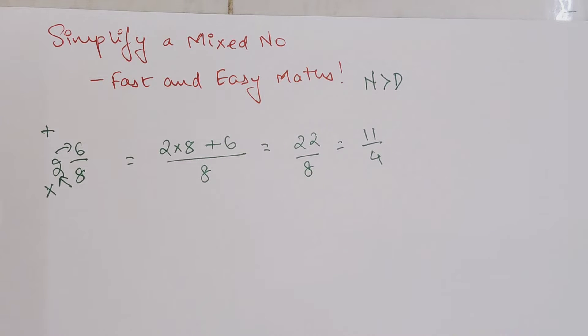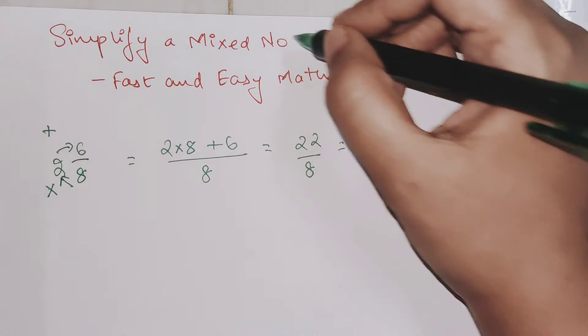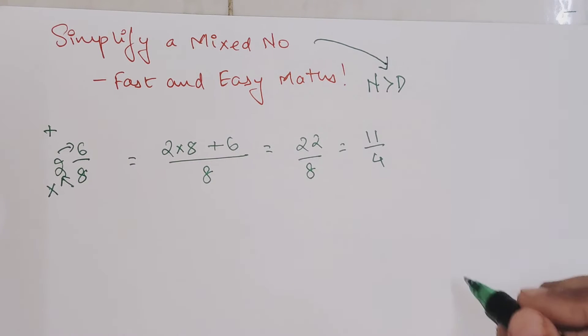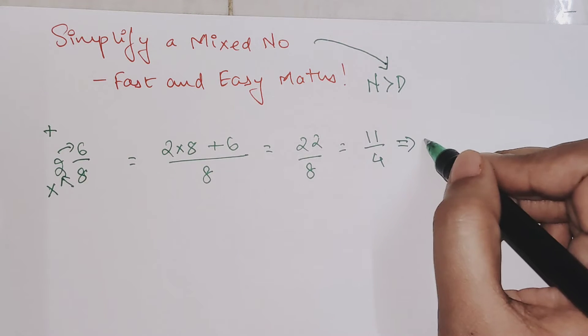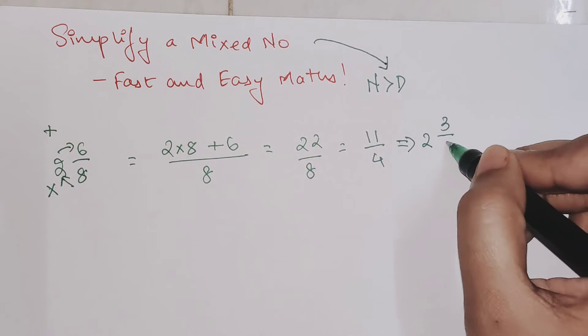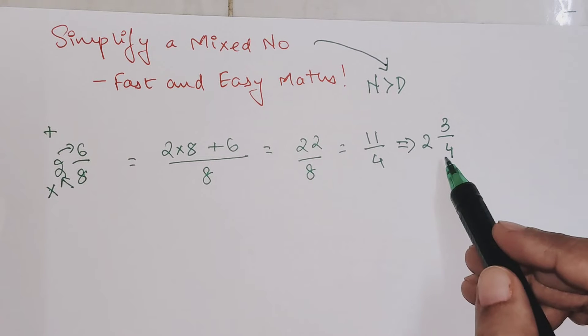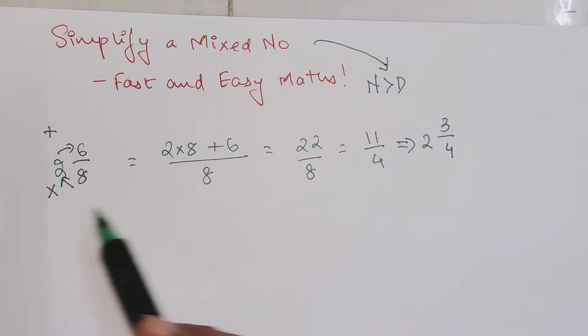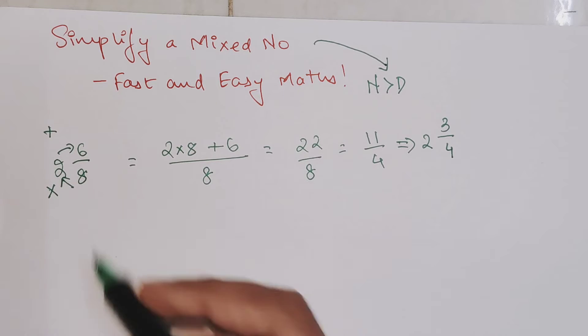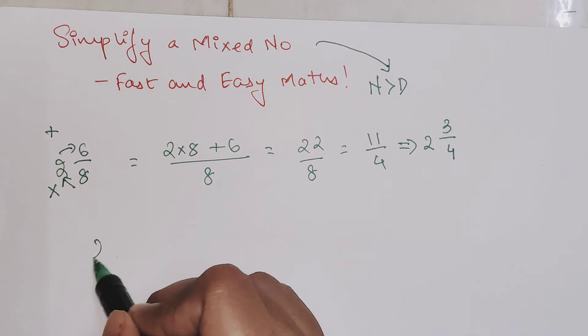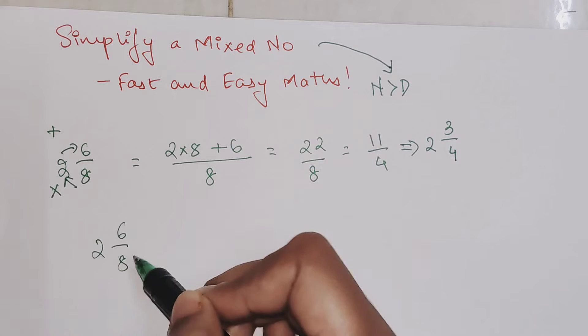Whenever you have an improper fraction, we always write it in terms of a mixed number. So here we'll get 2 3/4. This is the correct and simplified form of 2 6/8. Obviously, whenever you have something like this, you could have directly cancelled this.